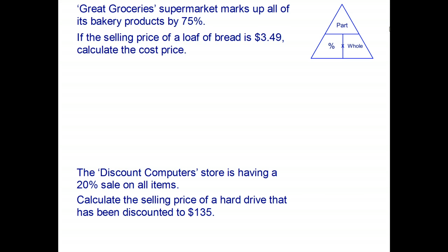Great Groceries supermarket marks up all of its bakery products by 75%. The selling price of a loaf of bread is $3.49. What is the original cost price? Since we're looking for the cost price, we're really looking for the original amount, and we know the formula for the original amount is part over percent.